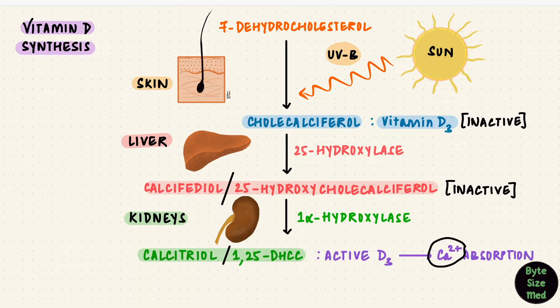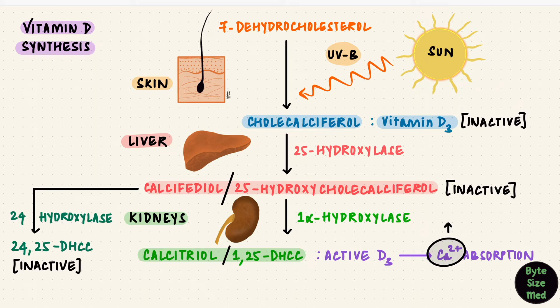If that is needed, active vitamin D is formed. But if there's enough calcium and that's not needed, the body chooses to instead hydroxylate a different position, again by the kidney, the 24th position, by a 24-hydroxylase. That forms 24,25-dihydroxycholecalciferol. This is inactive. So the 1,25 version is active, the 24,25 version is inactive. These can form metabolites which are then excreted from the body.